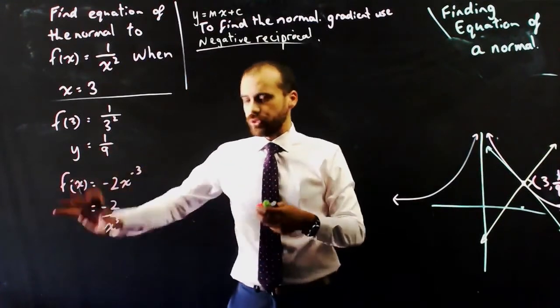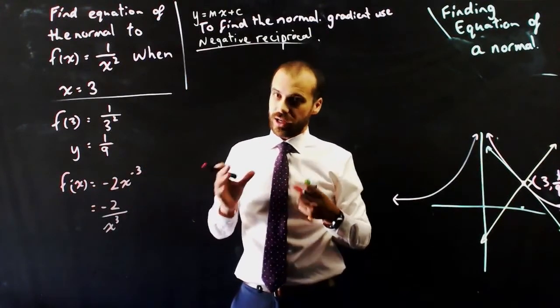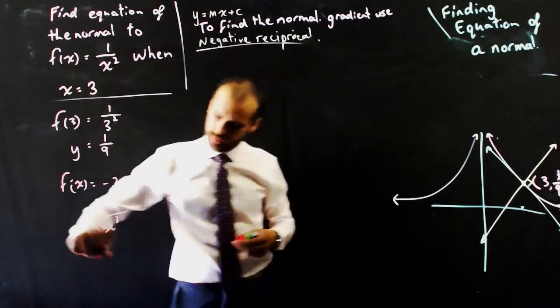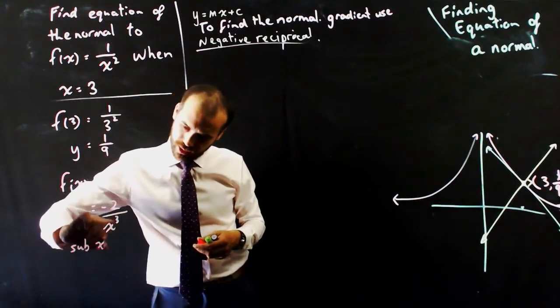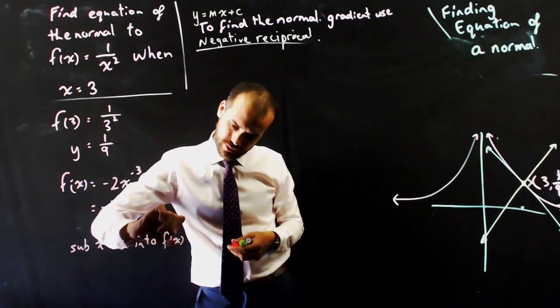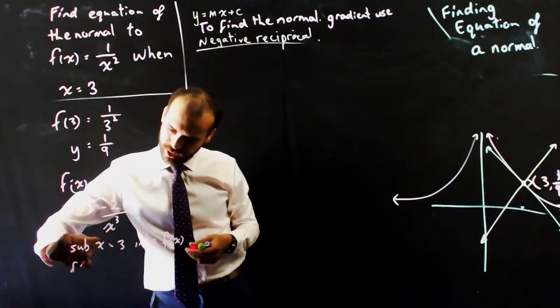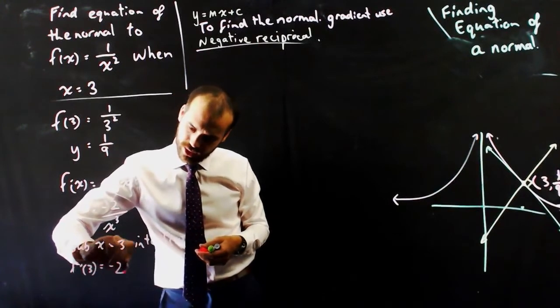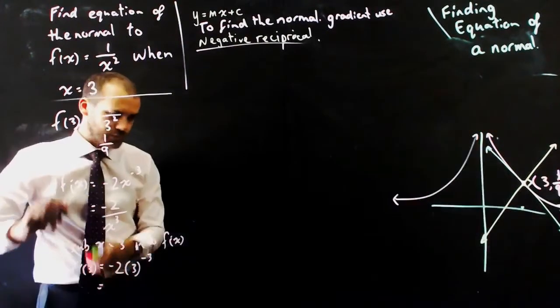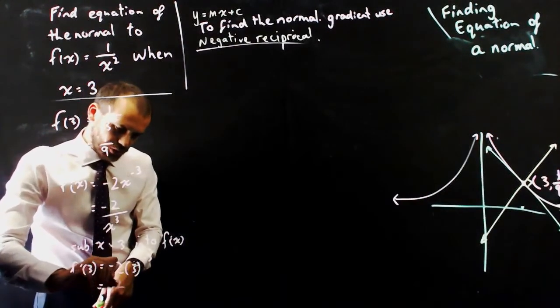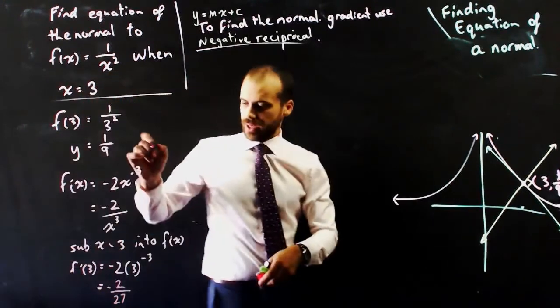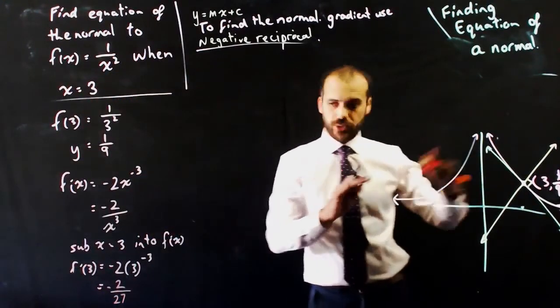Now that I've got my derivative function, I can find out what my derivative is at x equals three. I've got some room there. Sub x equals three into f'(x). So f'(3) equals negative two times three to the negative three, which is going to be negative two on 27. Could have done that in my head.